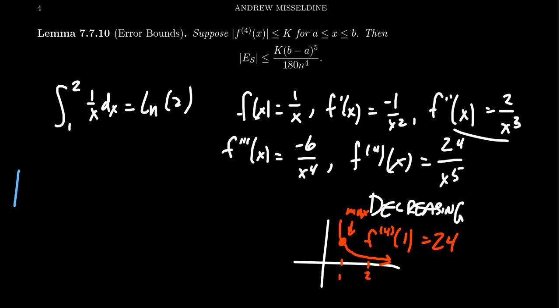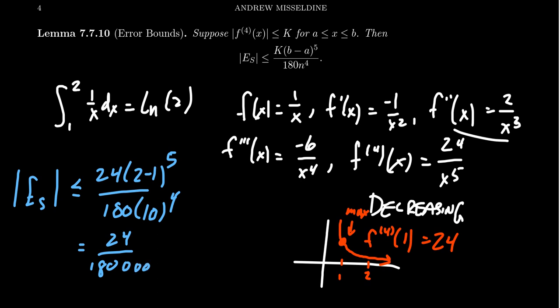Therefore, the error of Simpson's rule is going to be bounded above by 24 times (2 minus 1) to the fifth over 180 times—we had 10 subdivisions earlier—10 to the fourth. So we get 24 on top, 180 times, well, when you take powers of 10, you're just going to get four zeros. And so we're just going to concatenate four zeros on the end there.